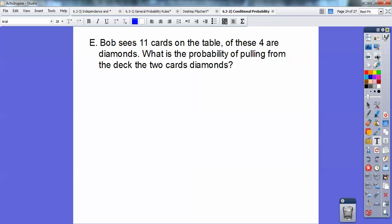Here's the last piece. Bob sees 11 cards on the table, and of these, 4 are diamonds. What's the probability of pulling from the deck the next two cards that are diamonds? The next two cards, sorry. I'm going to put that in right now, since I have a little extra time.